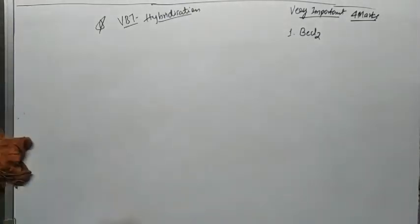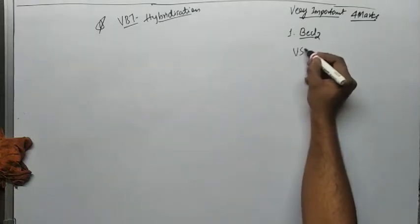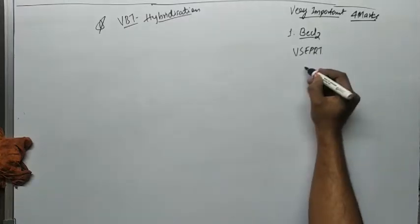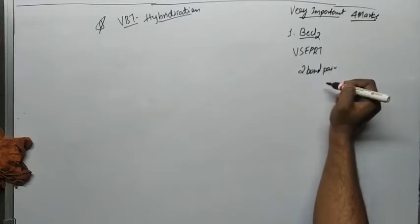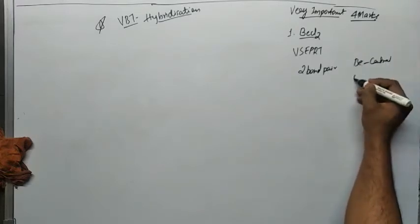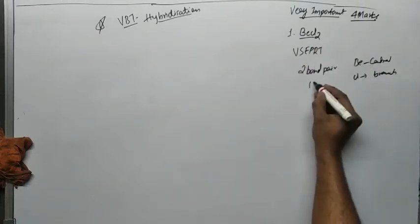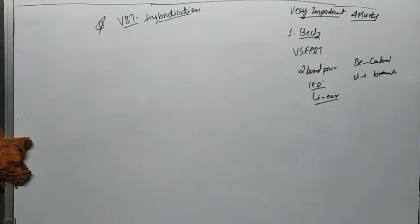Our first molecule is BeCl2. From VSEPR theory, we know that BeCl2 has two bond pairs. Beryllium is the central atom and chlorines are the branches. The bond angle is 180 degrees and the shape of the molecule, as per VSEPR theory, is linear.